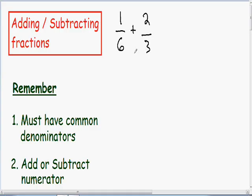What that means is we need to find the smallest number that we can multiply 6 or 3 by to give us the same denominator. Notice that if we multiply the 3 times 2, both our denominators would be the same. We would have a common denominator of 6, so 6 is going to be our least common multiple.